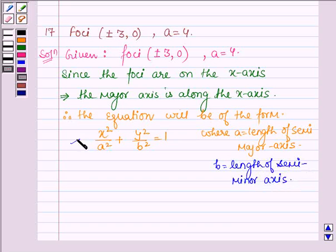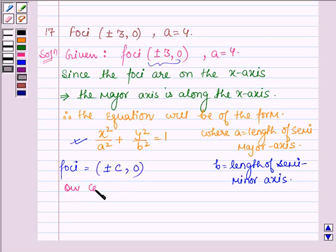Now the foci of this standard equation are given by (±c, 0), and here we are given the foci as (±3, 0). So on comparing we find that c is equal to 3, and also we are given that a is equal to 4.